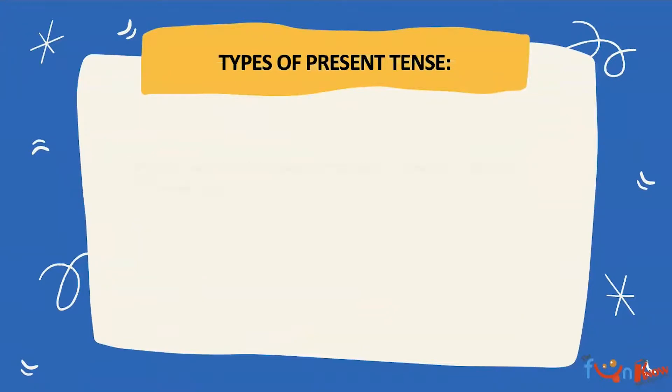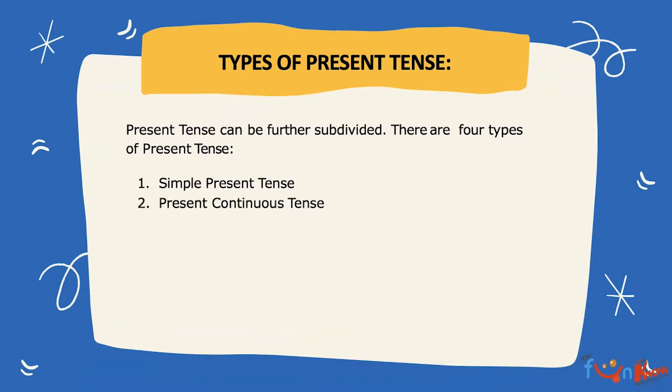Now we learned the types of present tense and what are the four types of present tense? Simple present tense, present continuous tense, present perfect tense, and present perfect continuous tense.